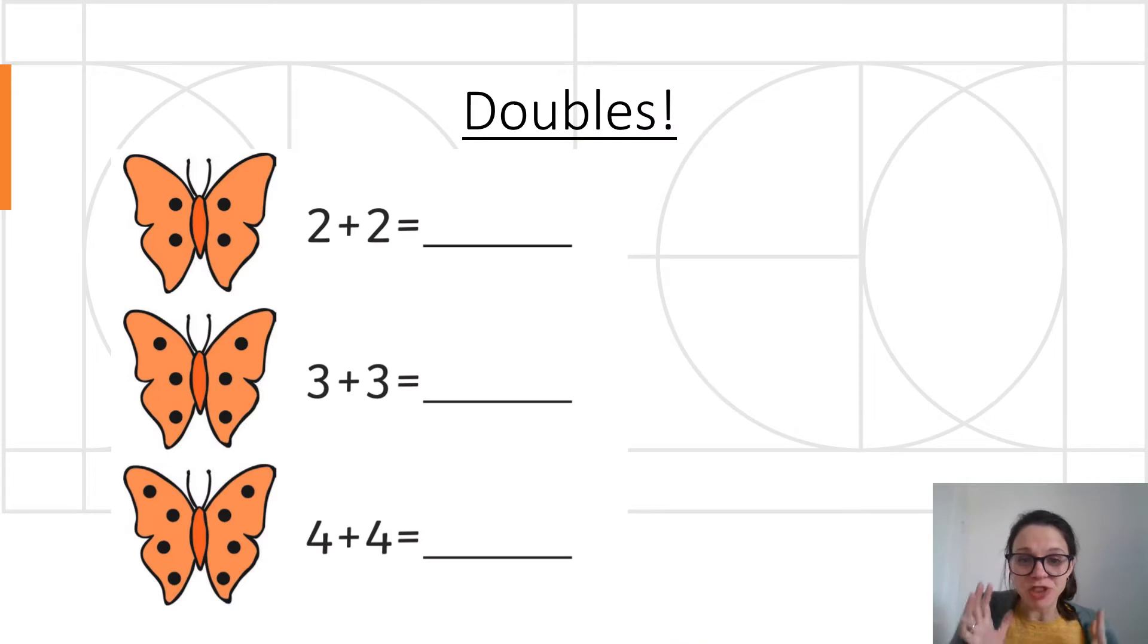We're going to start again with our doubles. Now we're starting nice and easy here. We haven't got ladybirds or dice today, we've got butterflies. And because butterflies have got two wings, we can use them to show our doubles. Remember that doubles are two groups of something. Two add two, three add three, and four add four. You shouldn't need any help from me. You can count the dots on the butterflies' wings if you need to, or hopefully these are facts that you're starting to learn. Write them down, pause the video and let's see how you get on.